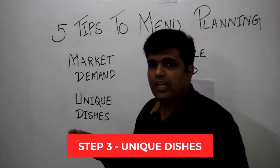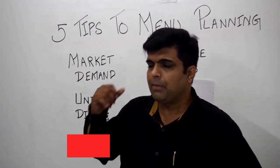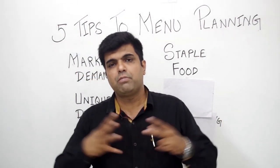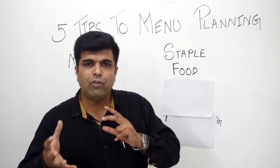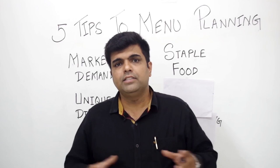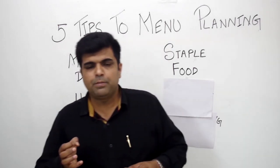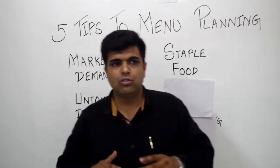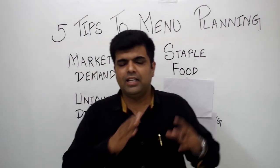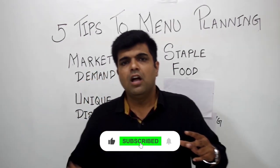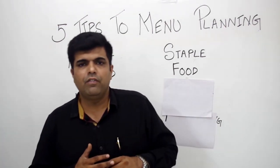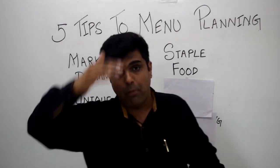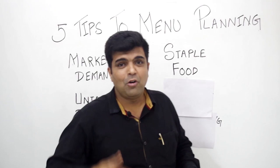Let's go towards the third point — unique dishes. When I tell you to go for staple food and look at the market demand, it doesn't mean you should not innovate. You can come up with new dishes, but they should usually be around 20 to 40% of your whole menu. The reason is the number of people who experiment with food is comparatively very less compared to the number of people who want to have their regular food. So you can innovate in the same category. Let's say you are selling Punjabi food — you can innovate with a couple of dishes. Let's say you are selling Chinese — you can innovate with a couple of dishes, but don't create a menu which is totally new because that will go bonkers and customers will not be able to understand it.